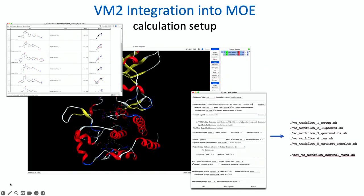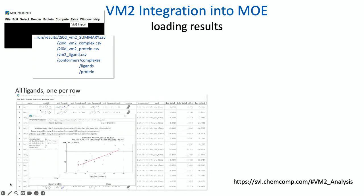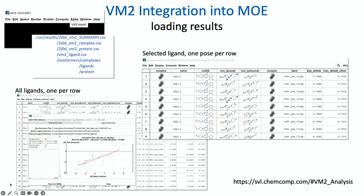We've been working on integration into MOE to improve usability — not quite ready for release yet, but pretty close. This allows you to generate your ligand database in MOE, prepare your protein, and then use a fairly simple interface to select various VM2 settings and output those scripts to run the calculation. On the back end, once the calculation is finished, you can import results directly into MOE, plot your results against experiment, and so on — taking advantage of all the back-end infrastructure MOE has to offer.